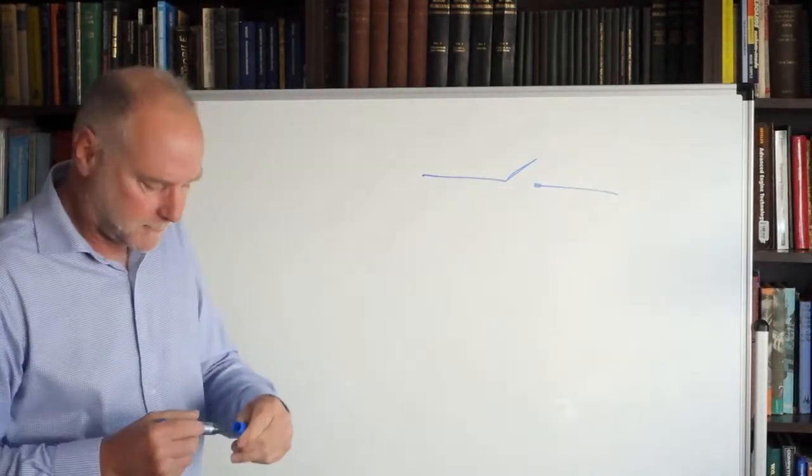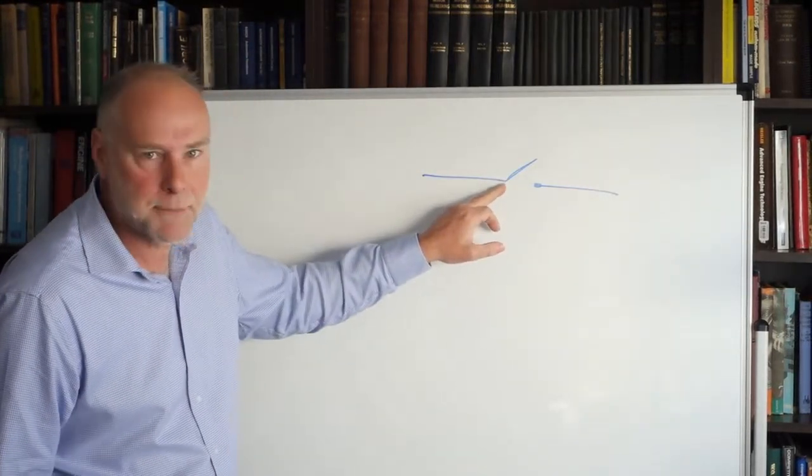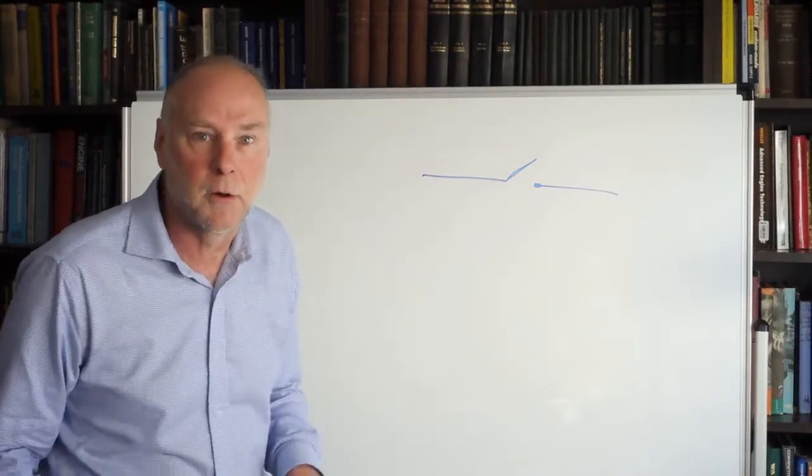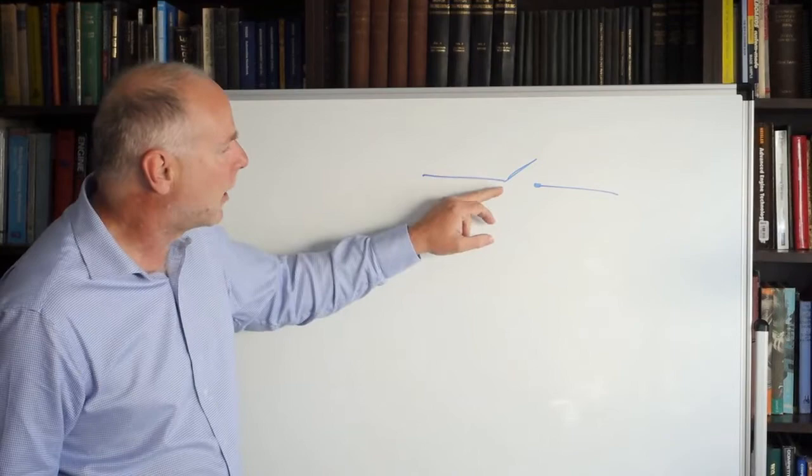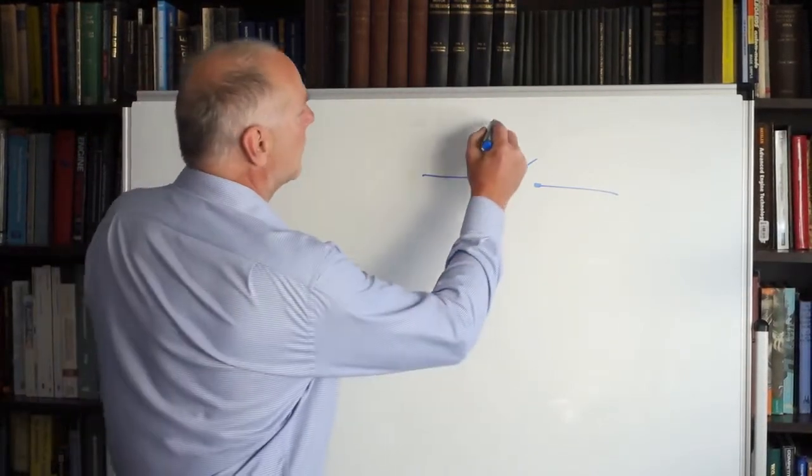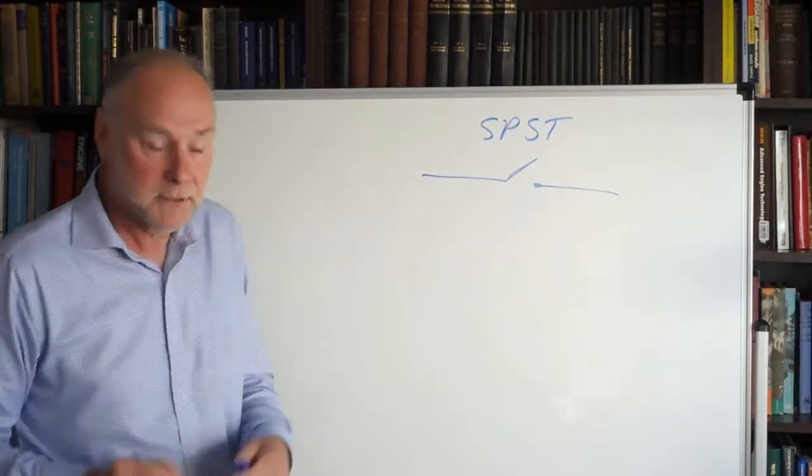Here we have a switch. It's a simple on-off switch. Now what's the pole? This terminal here is the pole. What's the throw? Well where can you switch that terminal? So this one's got a single pole and a single throw. It can only go in one direction. Sometimes called a single pole single throw switch. Easy isn't it?